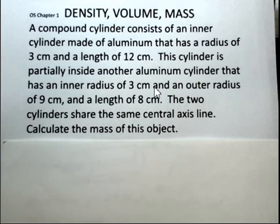The outer cylinder has an inner radius of 3 centimeters, so there's an exact fit between the smaller inner cylinder and the outer cylinder. The outer radius of the larger cylinder is 9 centimeters. It only has a length of 8 centimeters, and they're sharing the same central axis line.